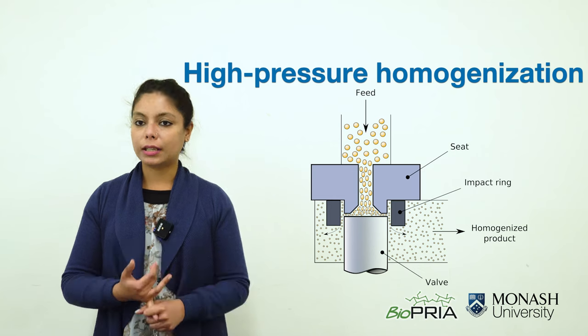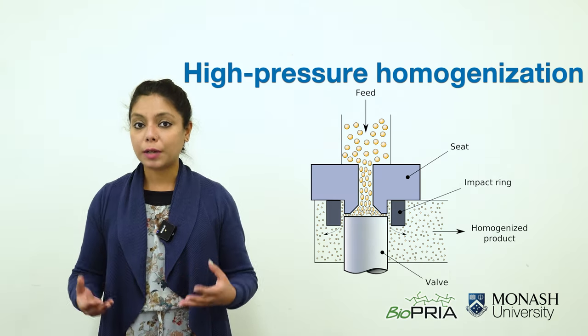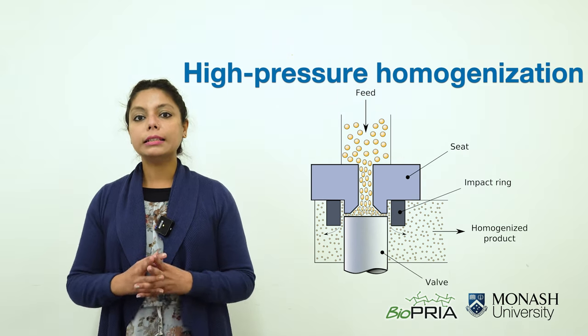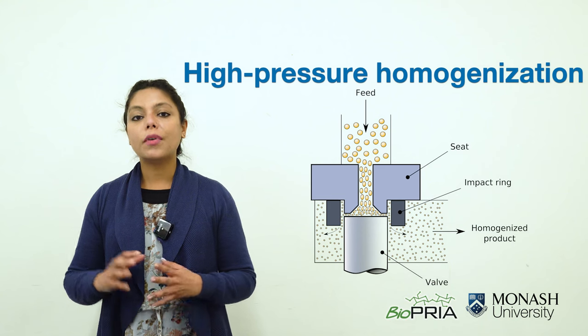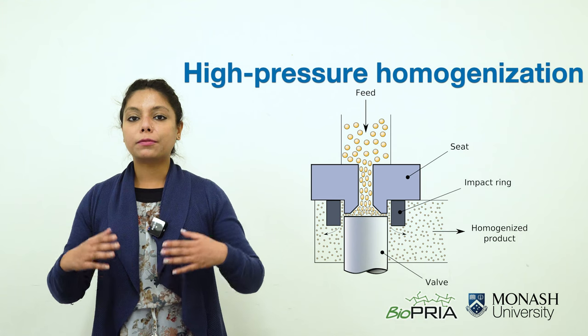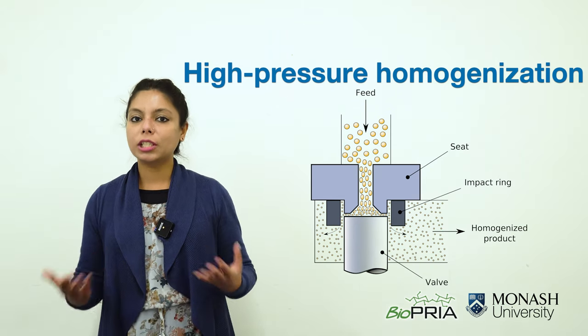Secondly in the homogenization we pass the oxidized fiber suspension through the homogenizer. In the homogenizer there is a small orifice. When the fiber suspension passes through that orifice at thousand bar the fibers get fibrillated and as a result we get nanocellulose gel.